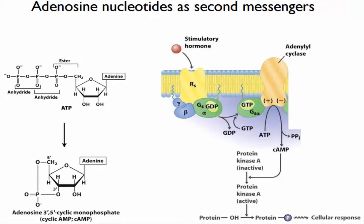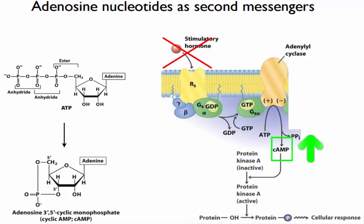The cAMP formed by adenylyl cyclases acts as a second messenger. When peptides such as glucagon bind hormone receptors, a signal transduction cascade occurs resulting in cAMP formation. cAMP binding then activates protein kinases, which phosphorylate enzymes for downstream activities. Edema factor increases the cellular concentration of cyclic AMP without the need for hormone signaling, thereby flooding the cell with cyclic AMP and destroying the careful balance normally achieved by hormones.